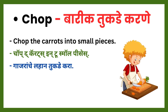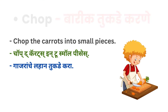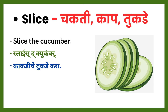Chop means bariq tukde karni — to cut into small pieces. Chop the carrots into small pieces — gajranche lahan tukde kara. Next verb: slice. Slice means chakti karni kiva kaap kiva tukde. Slice the cucumber — kakdiche tukde kara, kiva kakdiche kaap kara.